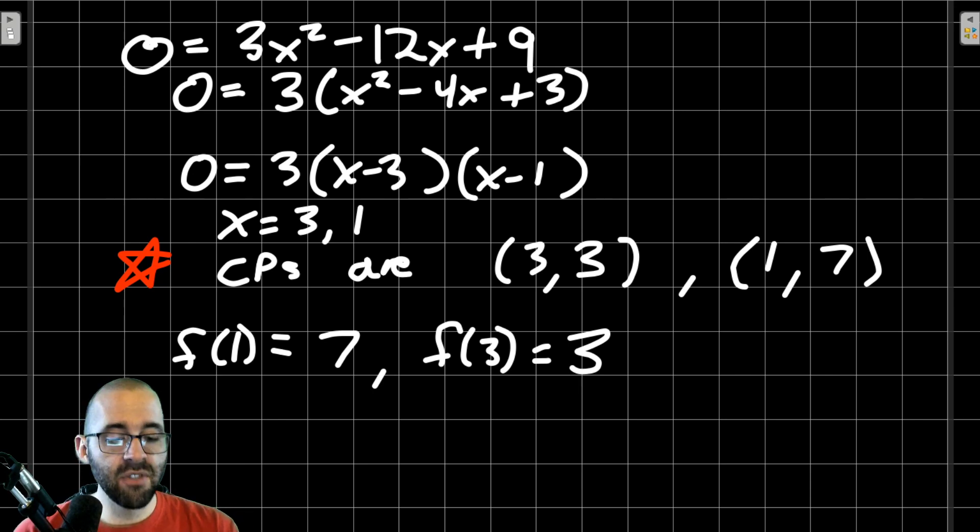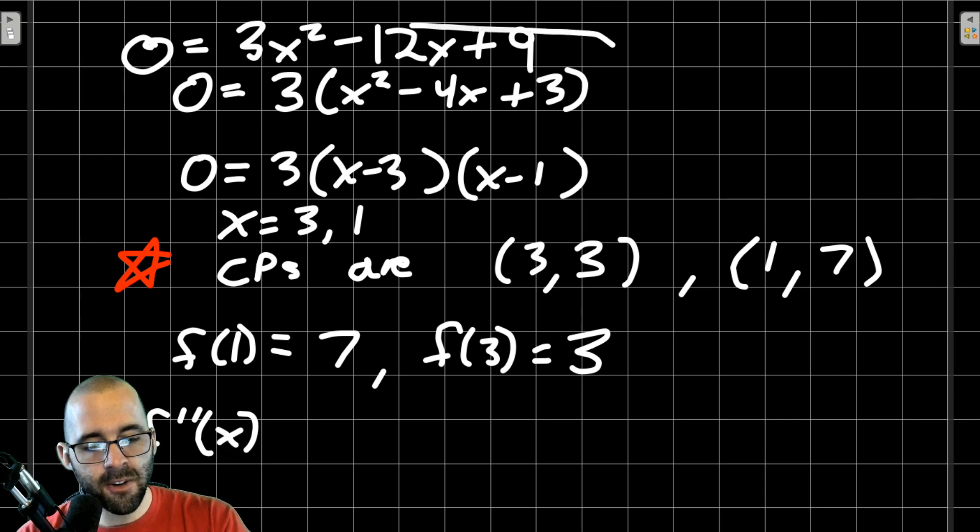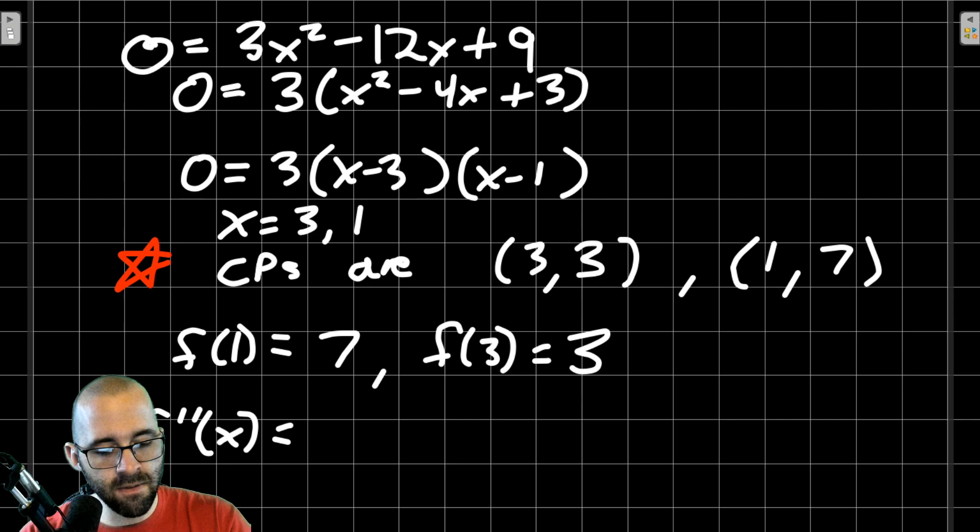We need to classify these critical points with either the first derivative test or the second derivative test. For practice, I'm going to use both. Before I use the second derivative test, we need to find the second derivative. The first derivative was 3x² - 12x + 9. We take the derivative again, we get 6x - 12.